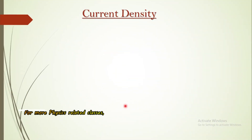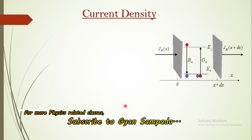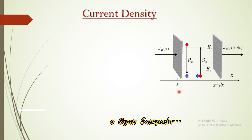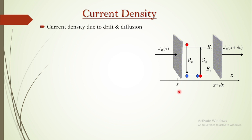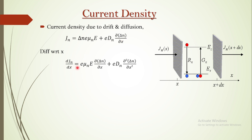Another form of the continuity equation can be expressed in terms of current density. Considering drift and diffusion, we write: J_n = delta n · e · mu_n · E + e · D_n · ∂(delta n)/∂x. Differentiating this with respect to x gives: ∂J_n/∂x = e · mu_n · E · ∂(delta n)/∂x + e · D_n · ∂²(delta n)/∂x².